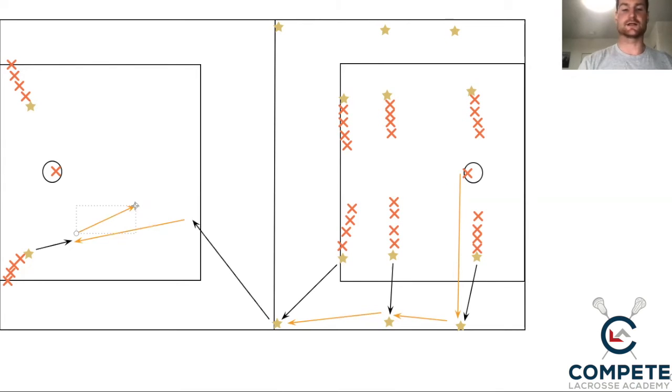So attack, they're going to stay in these two lines. So these might not have as many players. That's okay. Defense, long poles, all midfielders, they're going to rotate between these six lines.